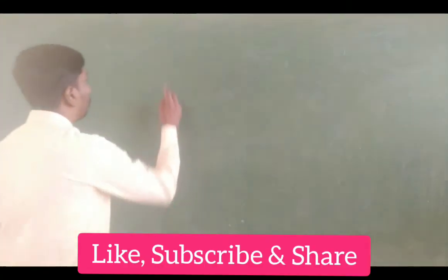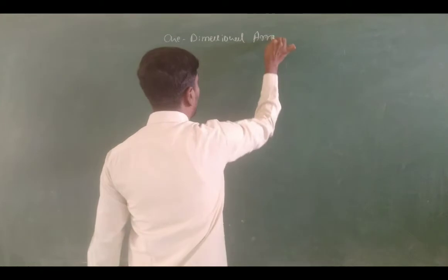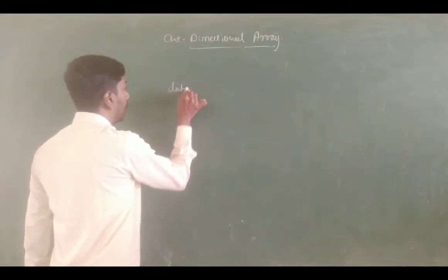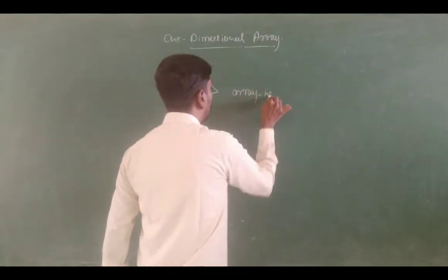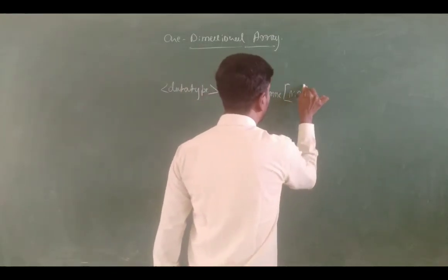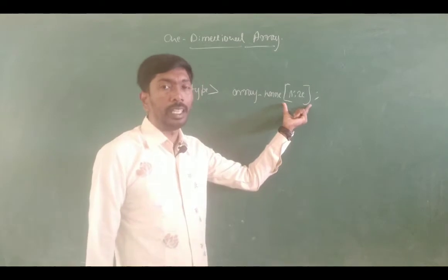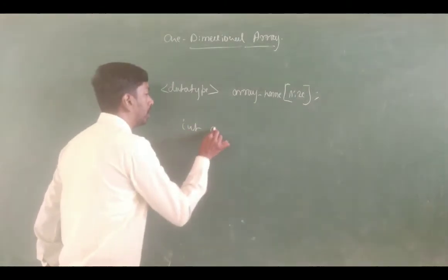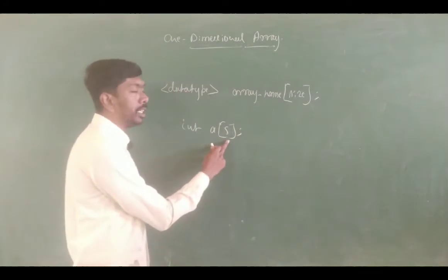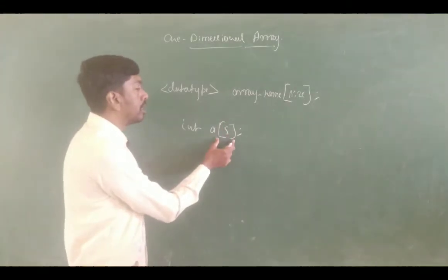One dimensional array. What is a one dimensional array? Array means it is a homogenous collection of data elements. We can use the data type, space, array name, square bracket, and mention the size. This is called a dimension. We can use one set of square brackets. For example, integer a of 5. This is called a one dimensional array — a homogenous collection of data elements with one set of square brackets.